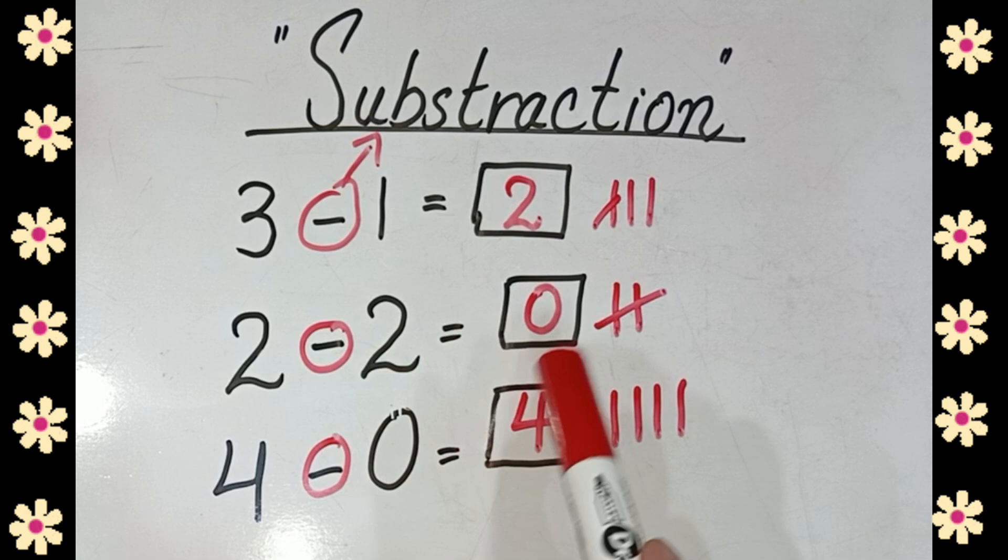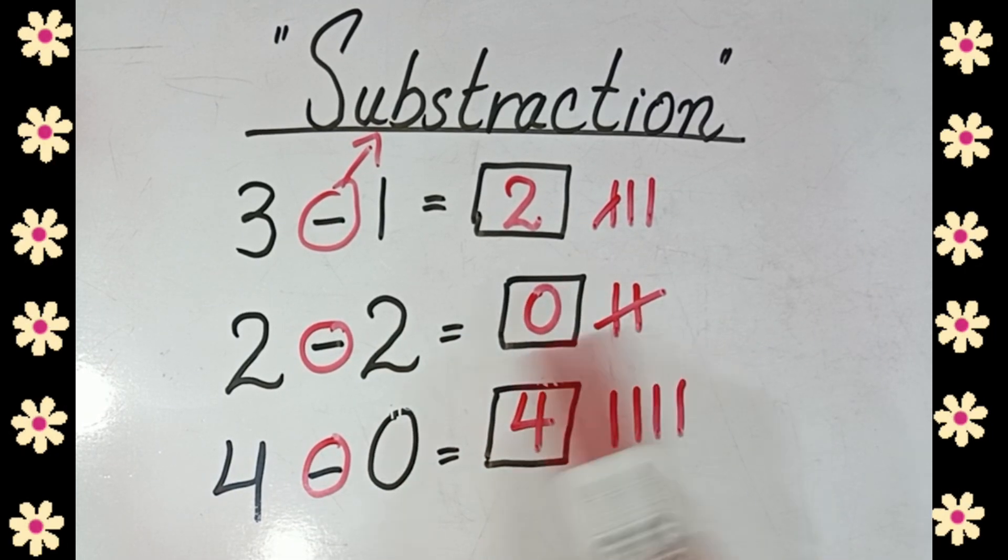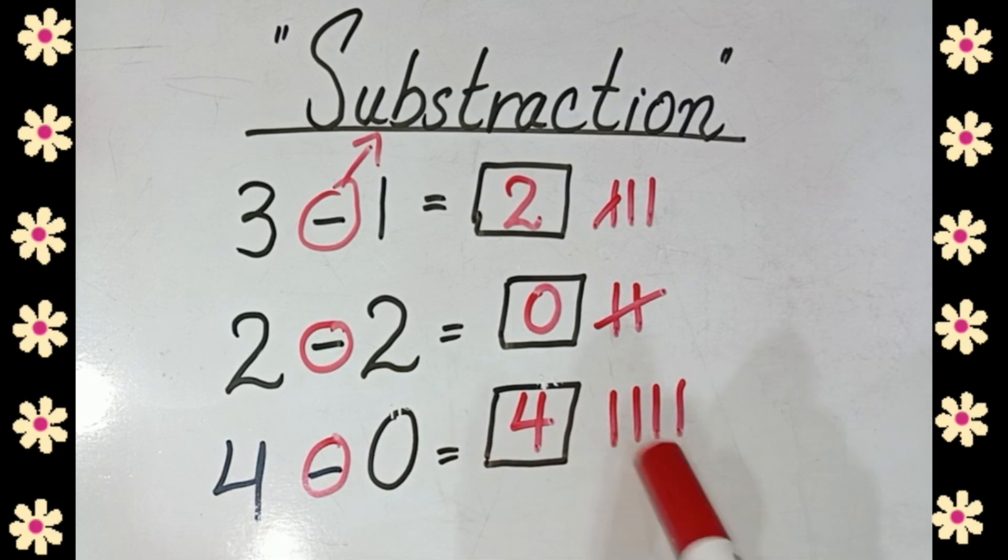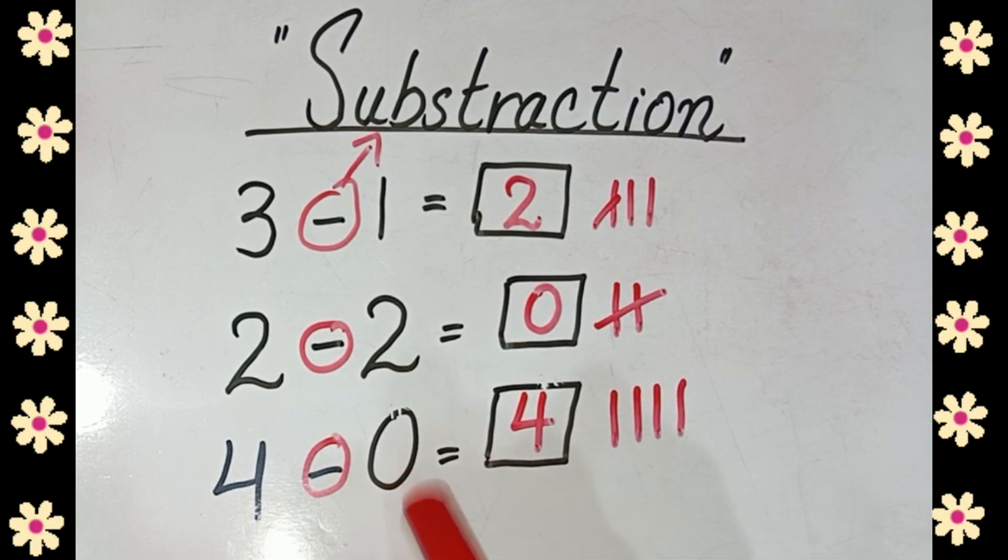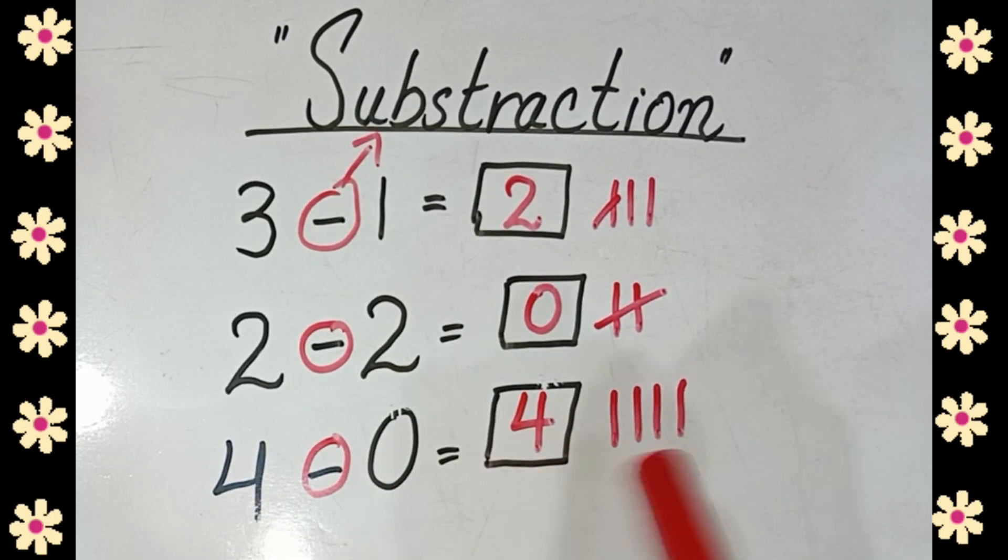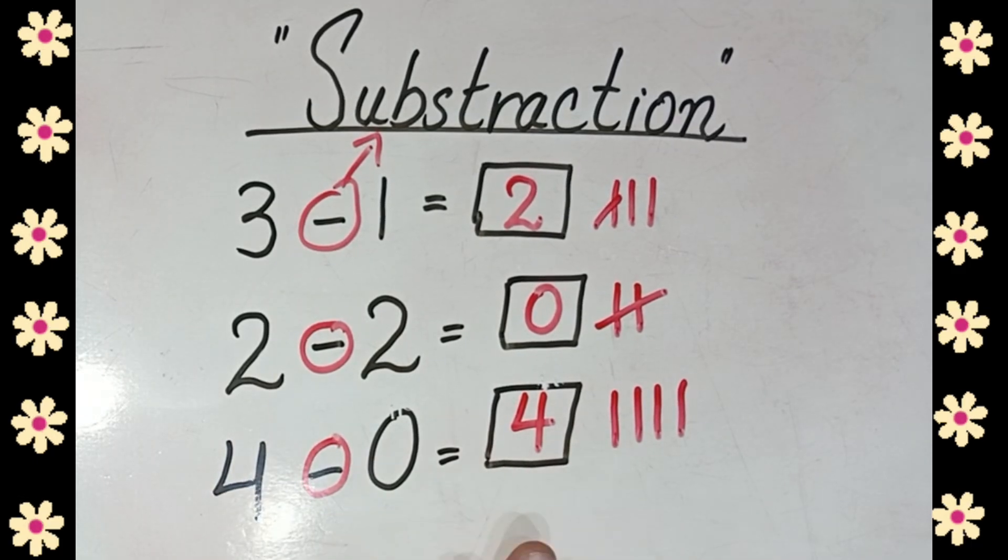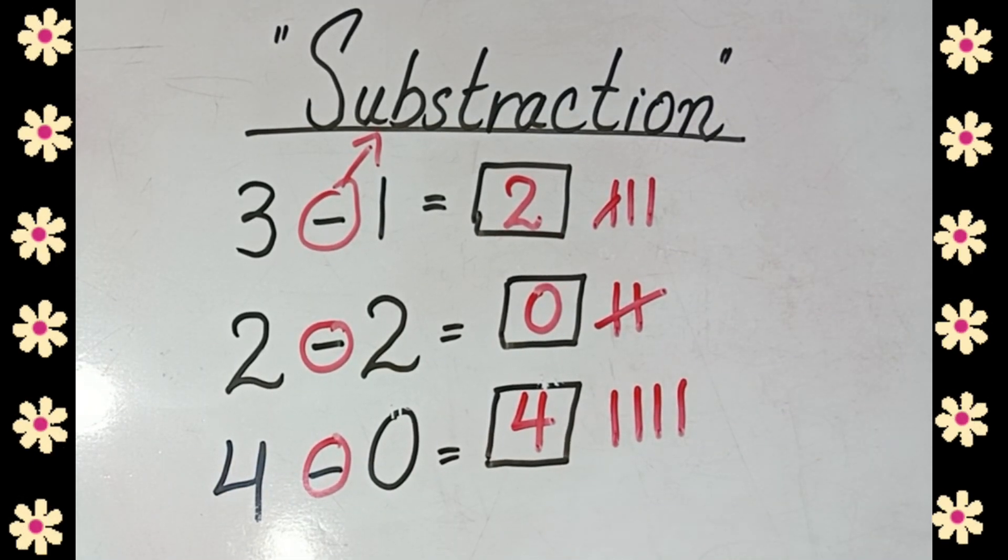minus 2 is equal to 0. 1, 2 minus 2 is equal to 0. 4 minus 0, 1, 2, 3, 4 minus 0, so we have 4. So this is subtraction. I hope you like this video, subscribe the channel.